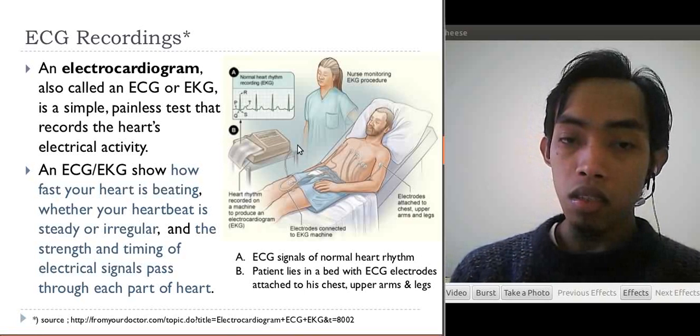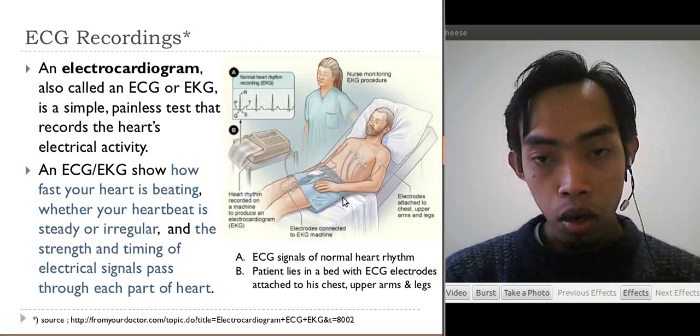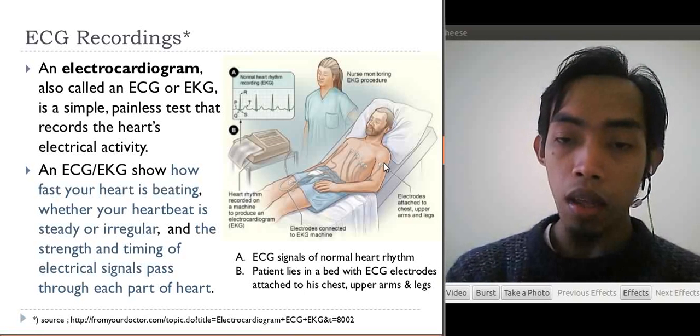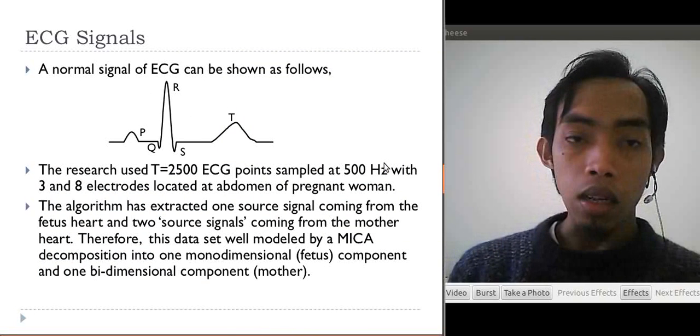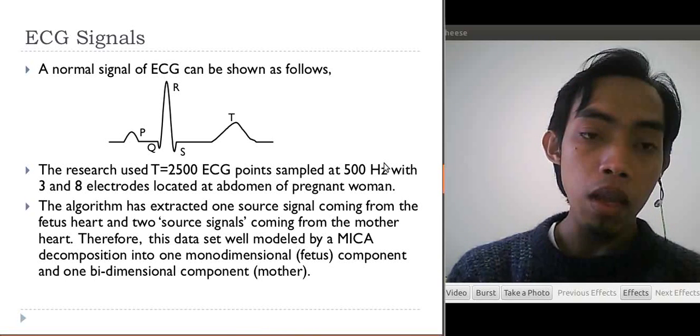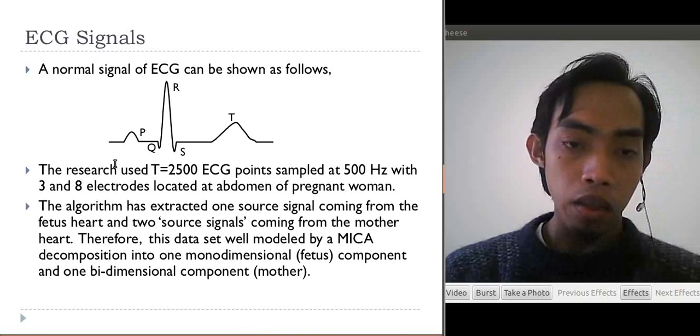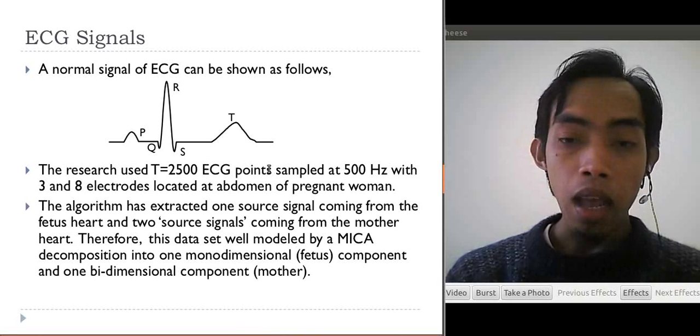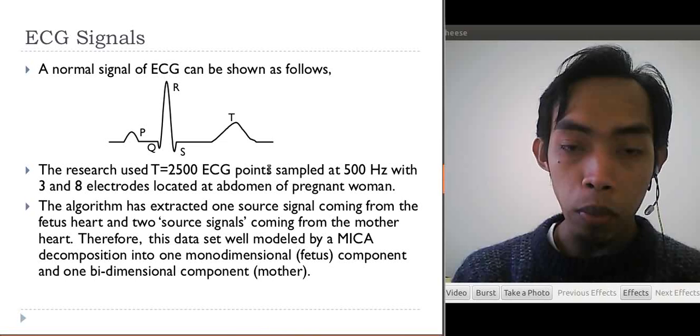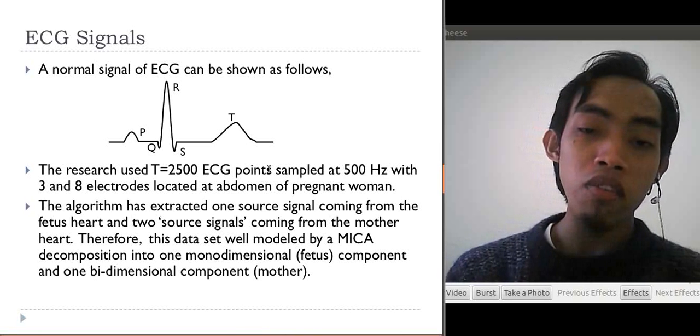Picture B shows the construction of an ECG recording. There are some electrodes or sensors, but in this paper they just use 3 and 8 electrodes and then compare them. This is an ECG signal. The common ECG signal for normal heart electricity rhythm is like this, called PQRST signal.